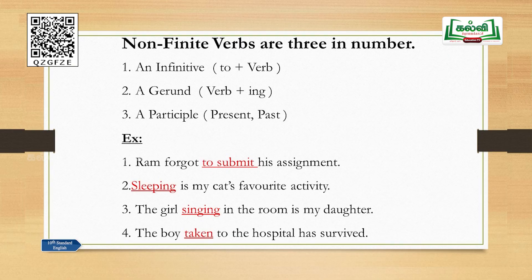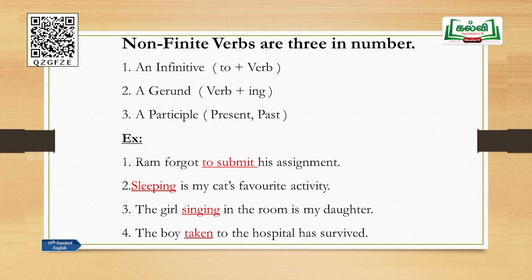Non-finite verbs are three in number: infinitive, gerund, and participle. They do not indicate tense and time of action and do not change when the subject changes. For example: 'Ram forgot to submit this assignment.' Here 'forgot' shows simple past tense — it is a finite verb. 'To submit' is in the form of an infinitive, so it is a non-finite verb.